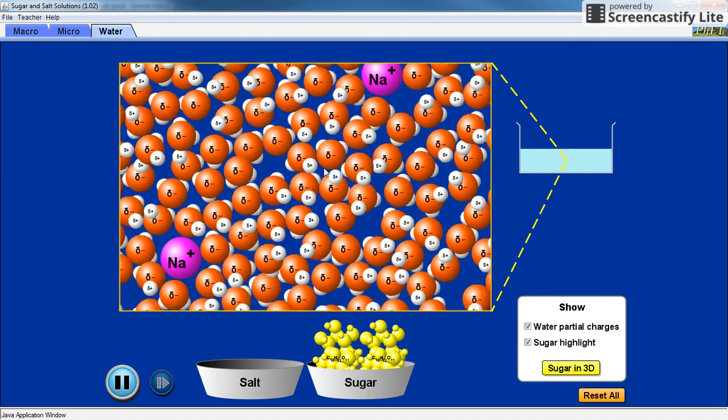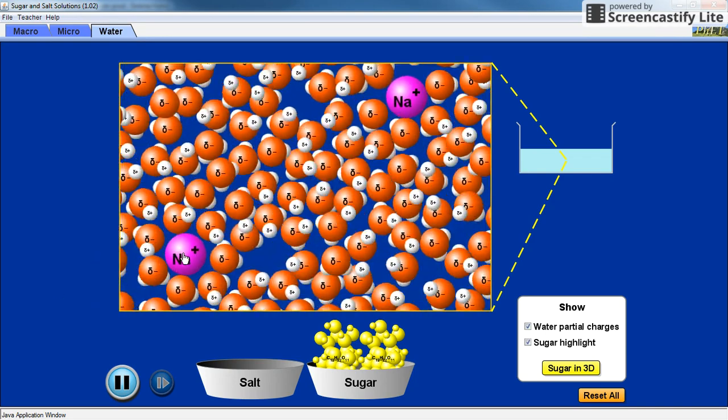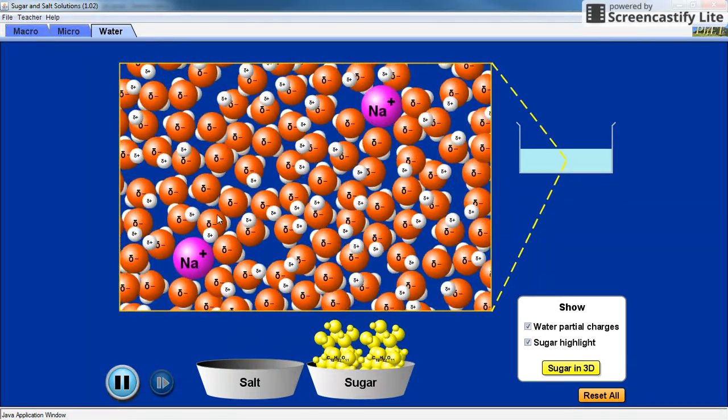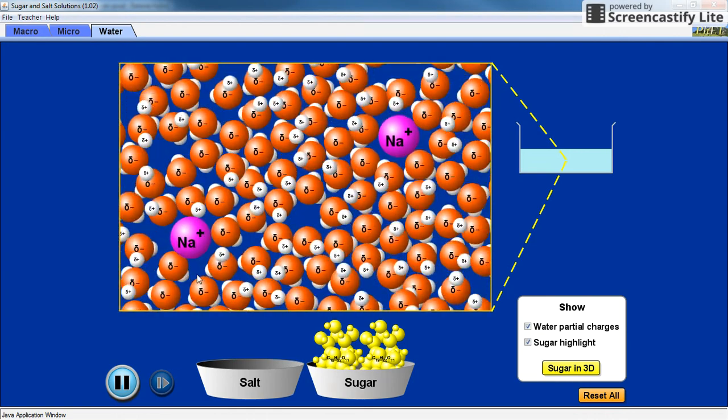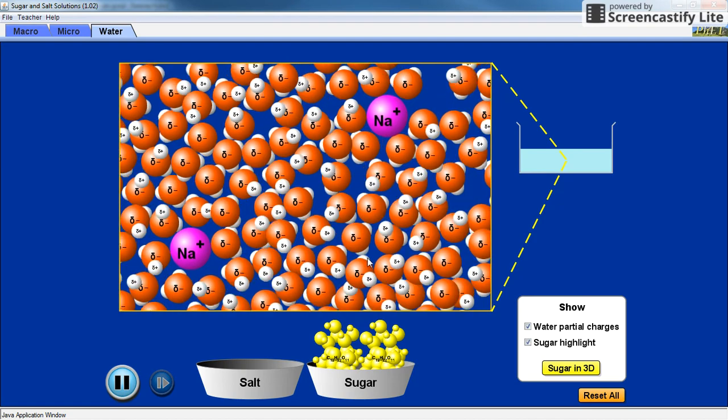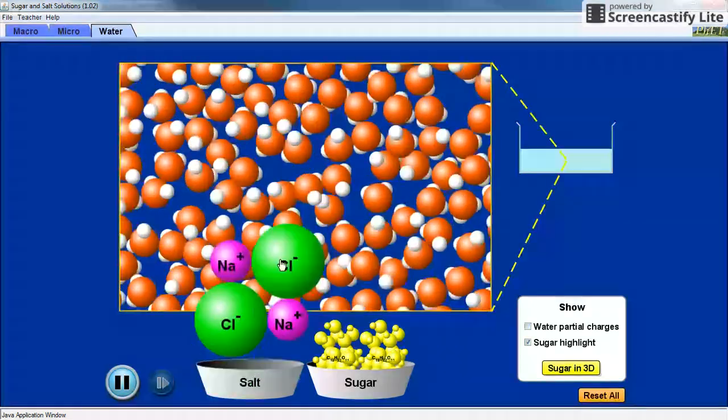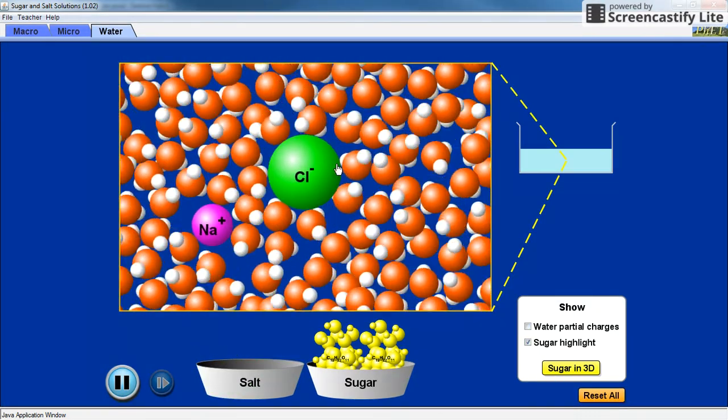Because it's positive, notice how the red oxygen is surrounding the sodium ions. If I just reset and I add it again, hopefully we'll see some chloride ions with the partial charges.